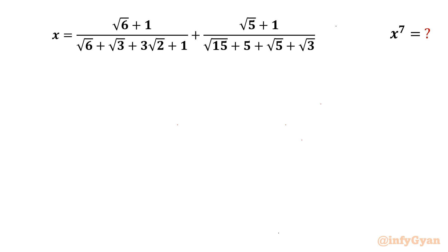Welcome back to Infigyan, my dear friends. In this video we are going to take up another challenging question from Olympiads. We have to evaluate x power 7, given x is (√6 + 1) over (√6 + √3 + 3√2 + 1) plus (√5 + 1) over (√15 + 5 + √5 + √3).